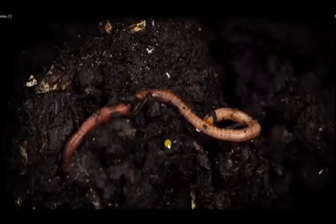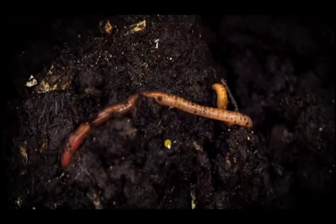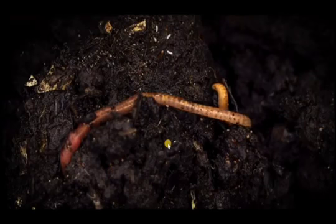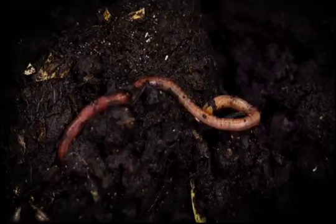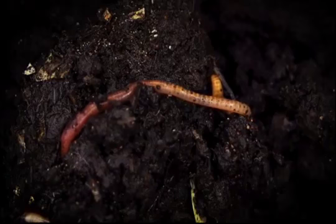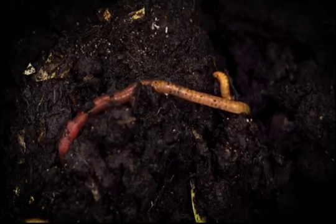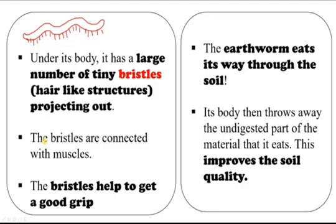When the front position moves, the back position is fixed; when the back position moves, the front position is fixed — only one part moves at a time. Under its body, the earthworm has a large number of tiny bristles — hair-like structures projecting outward. These bristles are connected with muscles and help the earthworm get a good grip, fixing its body into the ground.